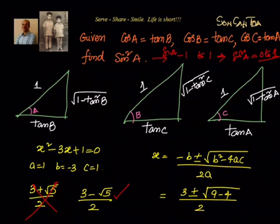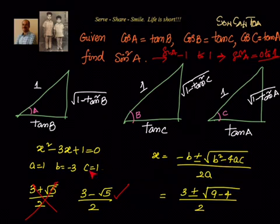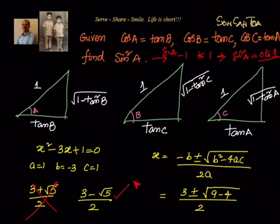Let's recap what we have done. We were given cos A equals tan B, cos B equals tan C, and cos C equals tan A, and had to find sin²A. We represented this in triangular format, started with sin²A from the first triangle, moved to the second, then the third, and obtained the equation sin⁴A minus 3sin²A plus 1 equals 0 — a quadratic in sin²A. Setting x equals sin²A gave x² minus 3x plus 1 equals 0. Using the quadratic formula, x equals (3 + √5)/2 or (3 minus √5)/2. The first value is rejected since sin²A must be between 0 and 1, so the correct answer is (3 minus √5) / 2.